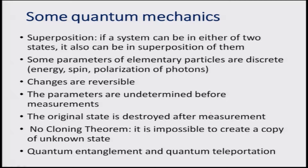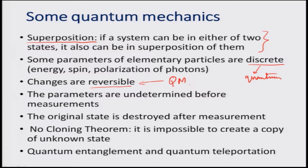Some of the most important quantum mechanical aspects used for quantum computing are the principles of superposition, which is one of the first principles necessary for the system to have any benefit over the classical system. If a system can be in either of two states, it can also be in a superposition of them. Some parameters of elementary particles are discrete — for example, energy, spin, polarization of photons — and those become the quantum mechanical quantities for us. Changes are reversible, and that is one of the biggest hallmarks of quantum computing.